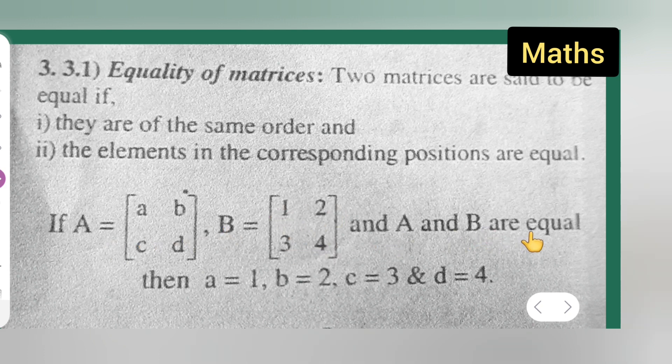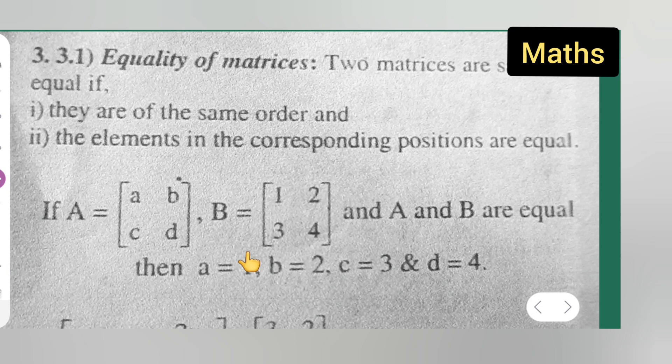Matrix A has elements a, b, c, d and matrix B has 1, 2, 3, and 4. A and B are equal. The orders are equal and the positions are equal.